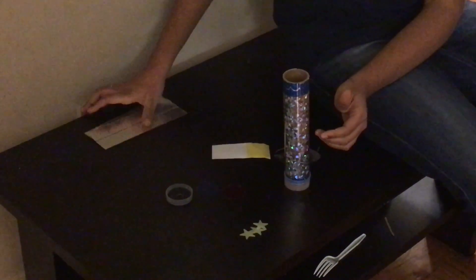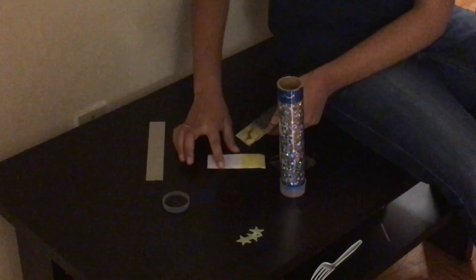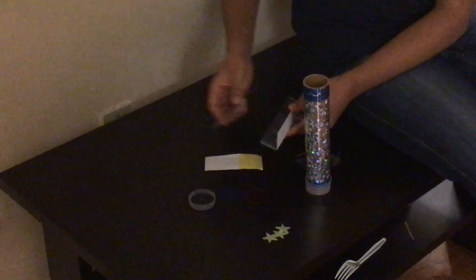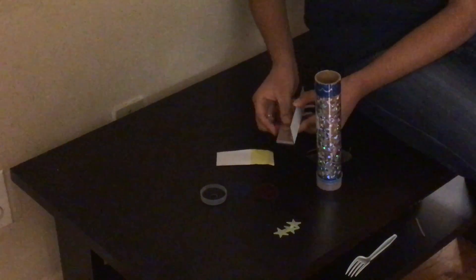Next, take your three mirrors. Take some adhesive, which I have right here, and then secure the mirrors together, like I was talking about before, in a 60 degree triangle formation.